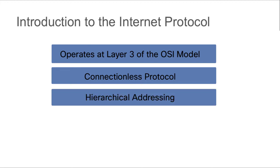IP uses hierarchical addressing. It is a 32-bit number — part of that number is what we call a network ID, and the other part is the host ID. The network portion is like a street you live on, and the host ID portion is the house number. This separation allows us to route traffic towards a network, and once we're on that network, we look for a specific host.